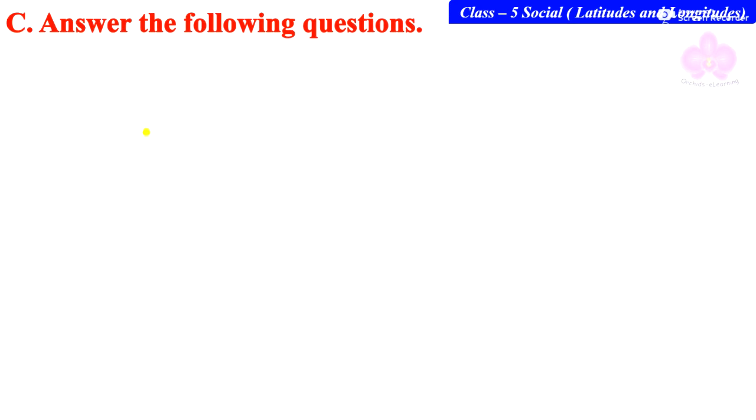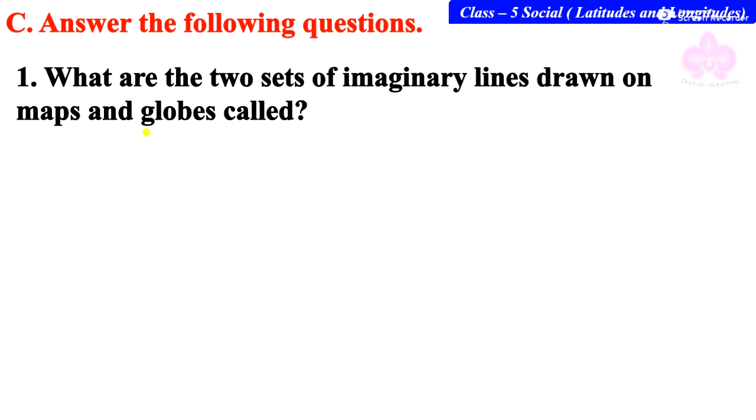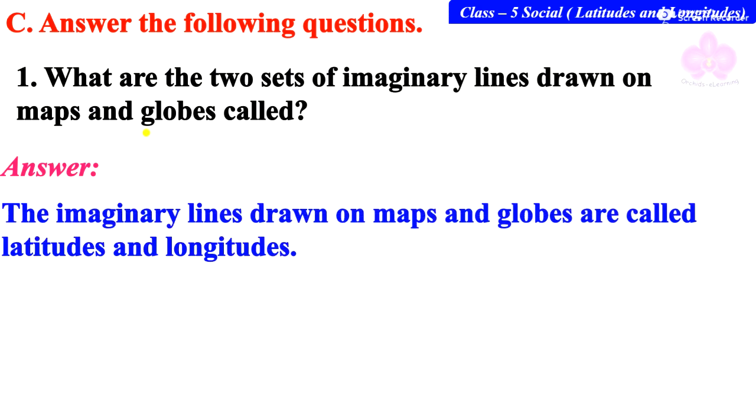Next, answer the following questions. First one: What are the two sets of imaginary lines drawn on maps and globes called? Answer: The imaginary lines drawn on maps and globes are called latitudes and longitudes.